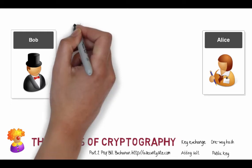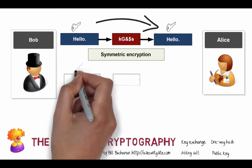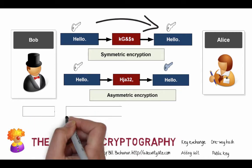Let's introduce Bob and Alice. The basic methods we have to send information from Bob to Alice are: symmetric encryption, where we use one key and pass that key from Bob to Alice so Alice can decrypt any cipher text; and asymmetric encryption, where we use two keys — one key to encrypt and another key to decrypt.